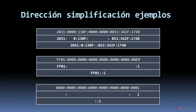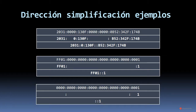Podemos encontrar direcciones compuestas de dos bloques que tienen información, siendo el resto — los seis bloques del medio — solamente ceros. También los podemos reemplazar por dos puntos dobles (::), y obtenemos una dirección mucho más corta. En el caso más extremo, podemos tener siete bloques formados por cero y al final un uno, lo que se resume como ::1. Los dos puntos dobles reemplazan los siete bloques de ceros, y como podemos omitir los ceros iniciales, nos queda solamente el uno.